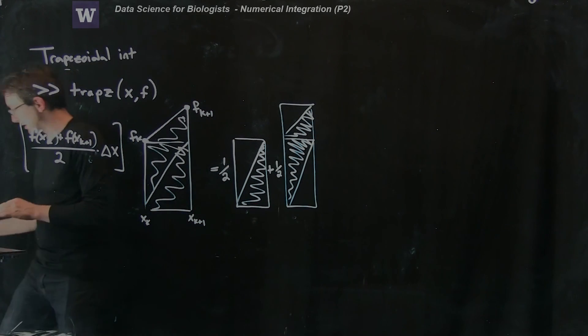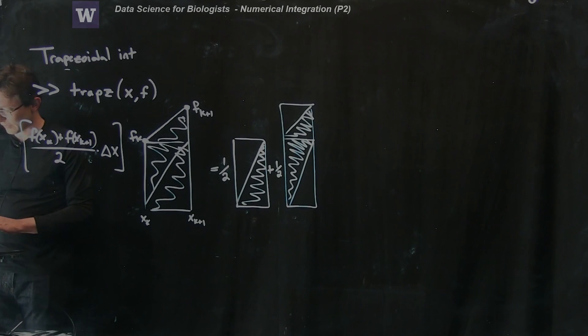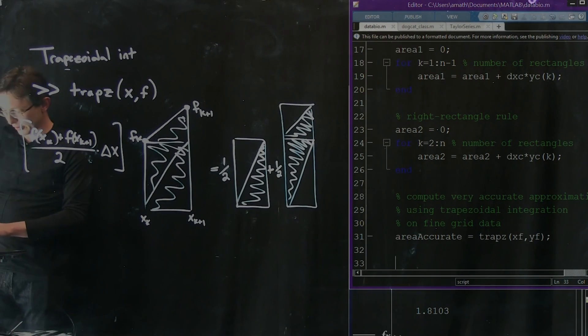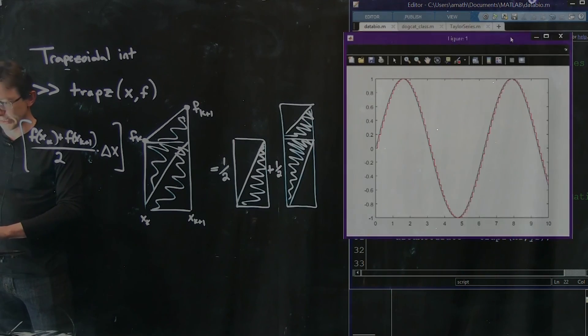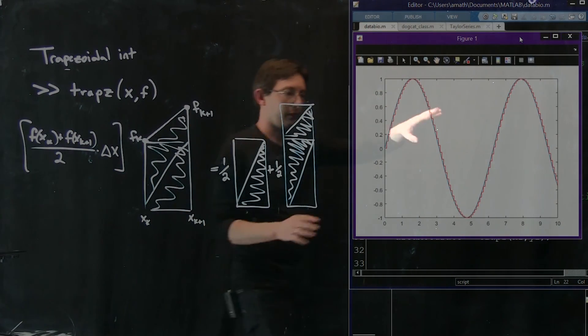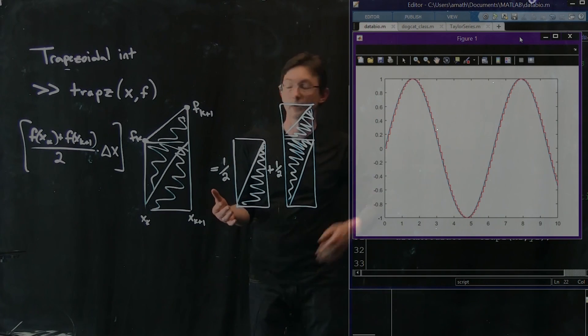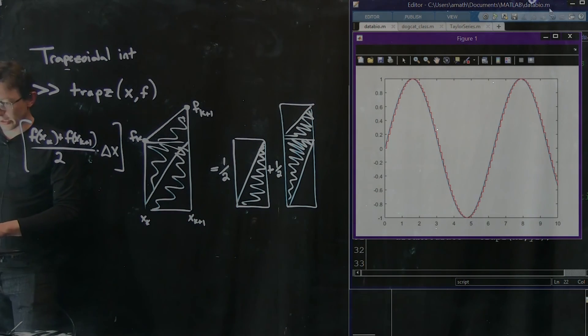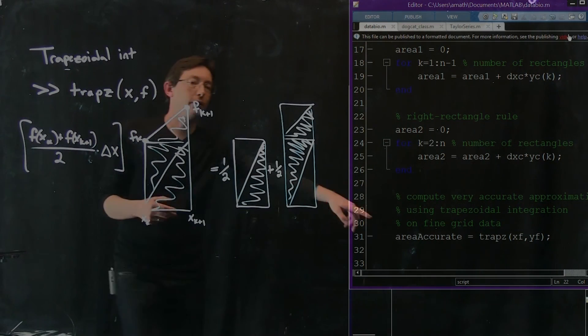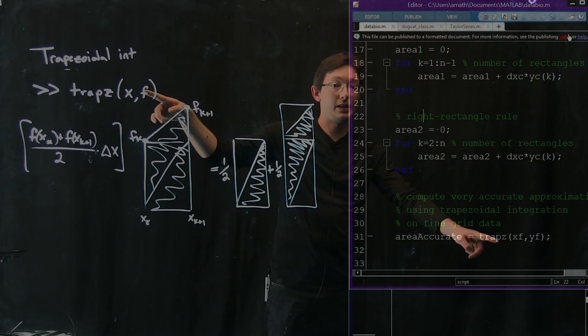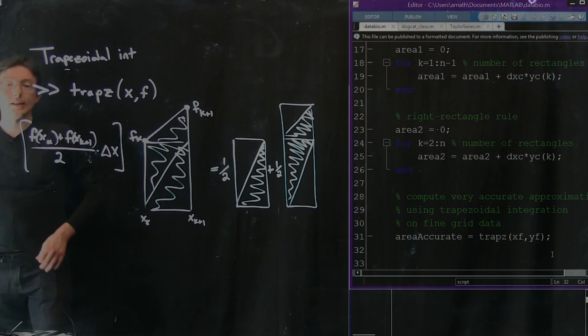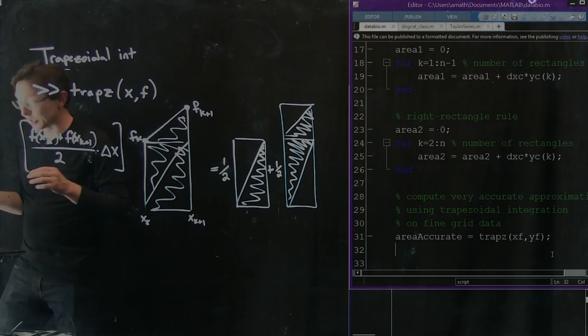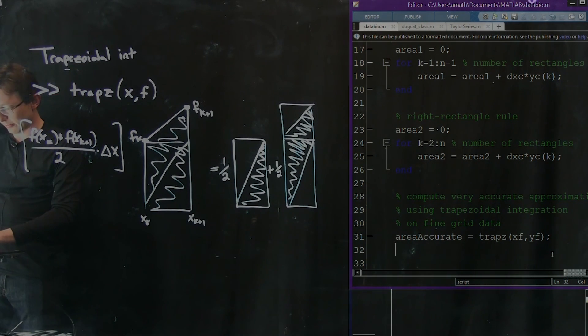Just to see that in MATLAB, we're going to try this out. Remember we had this example of the sine wave, and we discretized it, and we calculated the area using left and right rectangle rules. We also have this accurate trapz command that I told you about. Trapz does this trapezoidal integration for you. But we can also write this in a big for loop, and we can actually do this trapezoidal integration ourselves. That's what we're going to do now.